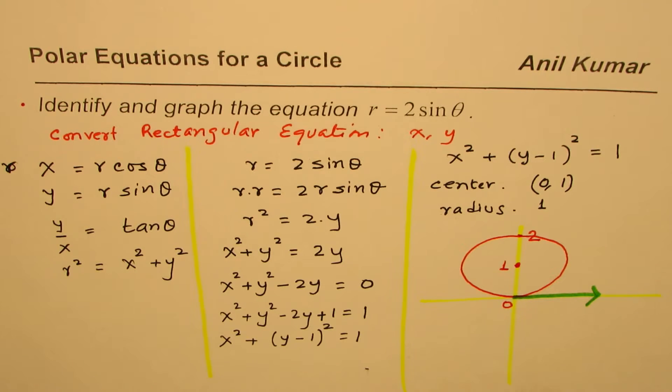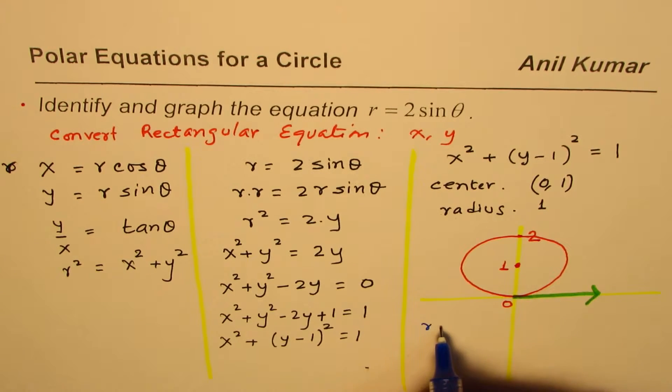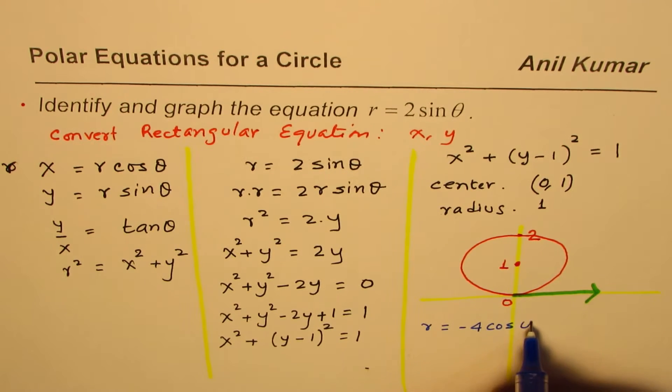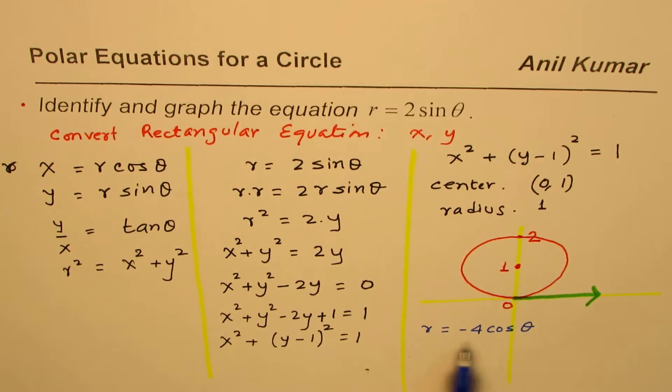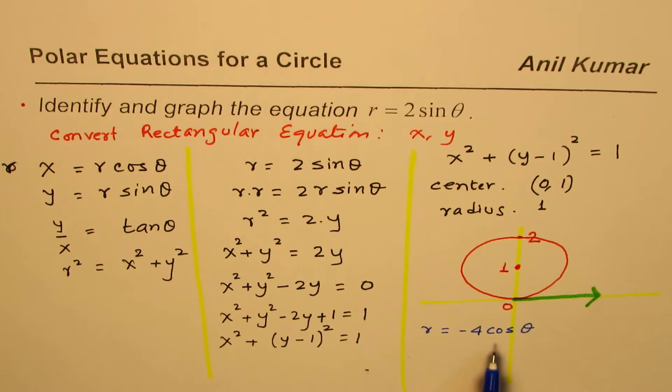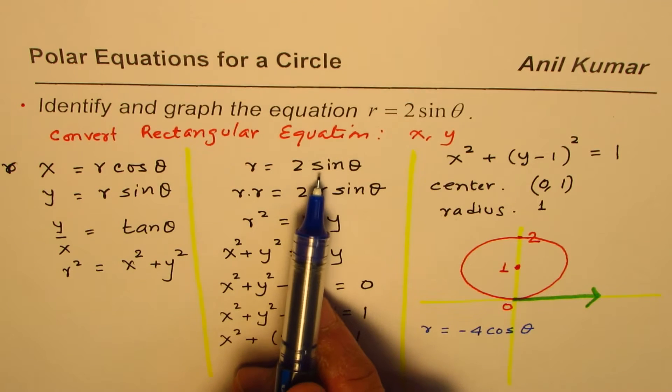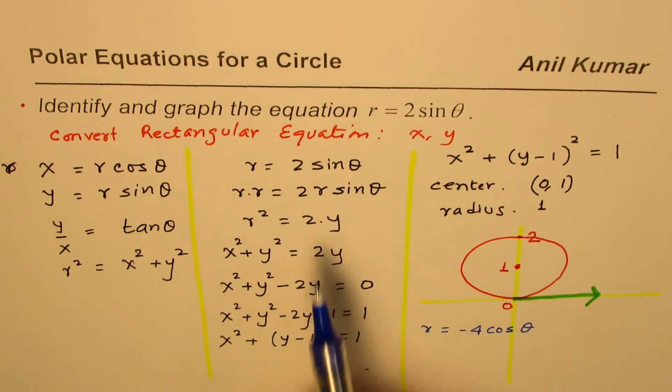Now as a practice, you can try what will be the result for r equals, let us say, minus 4 cos theta. So I am just changing the numbers here and the trigonometric ratio. Instead of sine, I am taking cosine. The method followed will be exactly the same.